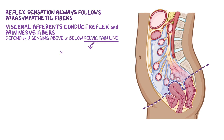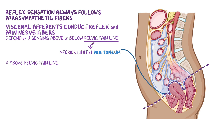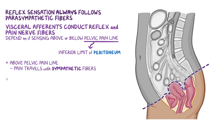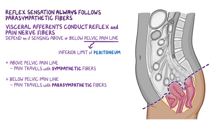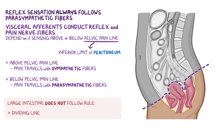This pelvic pain line represents the inferior limit of the peritoneum that extends into the pelvic cavity, and abdominopelvic organs can be either superior or inferior to this line. For structures above the pelvic pain line, or in contact with the abdominal peritoneum, visceral afferents sensing pain travel with sympathetic fibers, whereas for structures below the pelvic pain line, typically subperitoneal pelvic viscera, visceral afferents sensing pain travel with the parasympathetic fibers. However, an exception is that the path of visceral afferents sensing pain for the large intestine does not follow the pelvic pain line rule, and instead the dividing line is determined by a line going through the middle of the sigmoid colon.